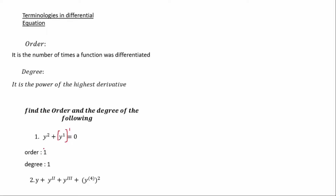Example 2: find the order and degree of the given equation. Going back to our definition, the order is the number of times the function was differentiated. Here the function is differentiated four times — and since the number is in brackets, it confirms it's the fourth derivative — so the order is 4. The exponent on that highest derivative is 2, so the degree is 2.